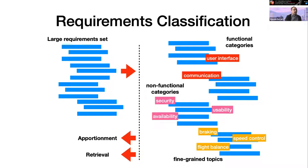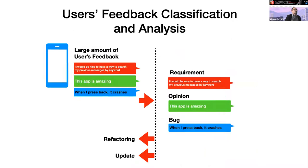Another classification task is user feedback classification and analysis. Here the task is more about distinguishing what is a requirement in a large set of app reviews — what is a requirement versus just a general opinion or a bug report. This has utility for refactoring or updating software. This has been a very lively and hot field of research recently, and summarization and other typical NLP tasks have been applied to user feedback.